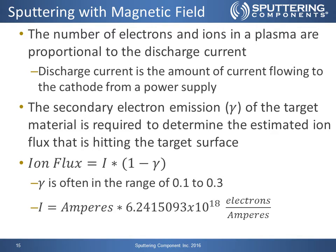The number of electrons and ions in the plasma are proportional to the discharge current, so the discharge current is the amount of current flowing to the cathode from a power supply. The secondary electron emission gamma of the target material is required to determine the estimated ion flux actually hitting the target surface. Our ion flux equals current times (1 − γ), where gamma is often in the range of 0.1 to 0.3, and current is amperes times 6.24 × 10¹⁸ electrons per amp.